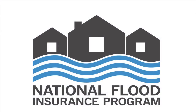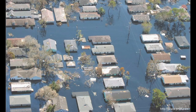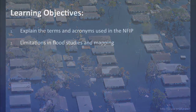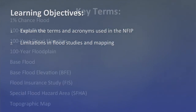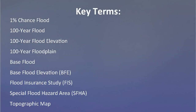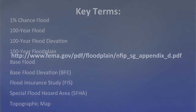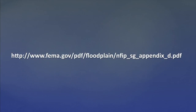As you know from viewing other videos in this series, there are many terms and acronyms used in the administration of the National Flood Insurance Program, or NFIP. Many of these terms are meant to express notions of flood risk. In this video, we will explain the terms and acronyms used in the NFIP that are most critical for understanding concepts of flood risk, and explain the limitations in the ability of flood studies and mapping to express the real risks faced by property owners. These key terms and acronyms will be used during this presentation. You can find the terms and their definitions at the web address on screen.